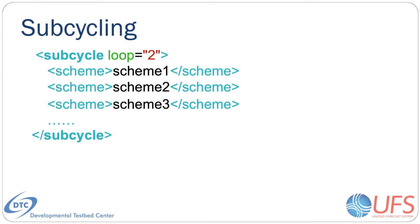The SDF allows subcycling of schemes, or calling a subset of schemes with a shorter time step than others. The subcycle loop equals n element in the SDF controls this function. All schemes within such an element are called n times during one CCPP run call. An example is found in the FV3GFS v15.2.xml SDF, where the surface schemes are executed twice during each physics time step, implementing a predictor-corrector paradigm in which a scheme is called first to provide a first guess, and then again to provide the final results.